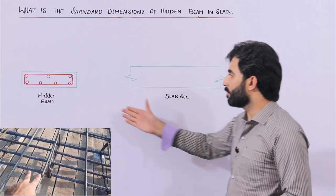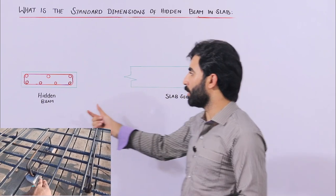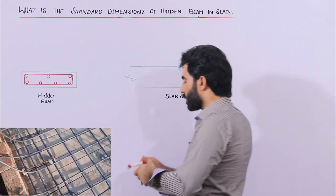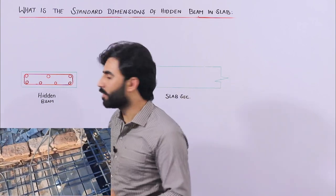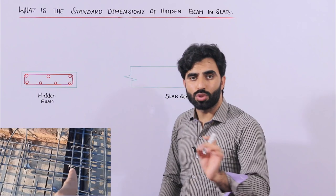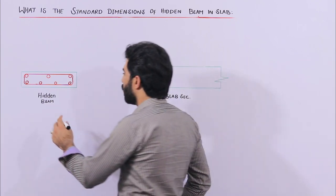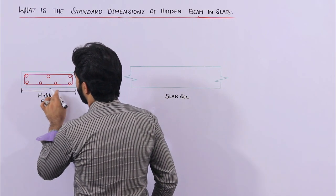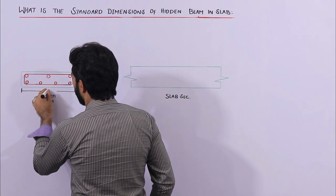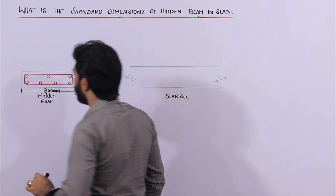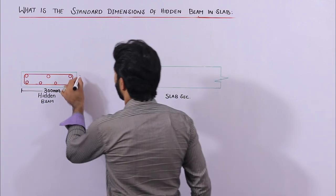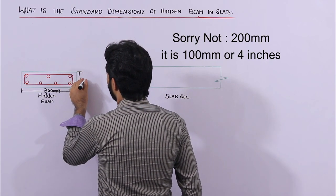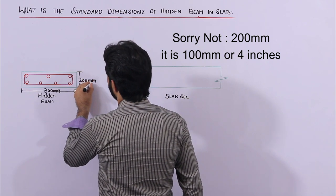What should be the standard size of a hidden beam? As you can see, this is the hidden beam section and this is the slab section. For a residential building up to two to three stories, the width of the hidden beam should not be less than 300 mm. That is the standard width. Now, what should be the depth of the hidden beam? The depth should not be less than 200 mm, which is about four inches.